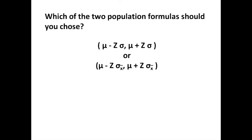Which of the two population formulas should you choose? The first is Mu minus Z times Sigma and Mu plus Z Sigma. And the second is Mu minus Z Sigma of X bar and Mu plus Z times Sigma of X bar. The first is a data formula confidence interval and the second is an X bar formula. You are exactly correct. It is the latter of the two formulas, because we are looking for an interval on X bar and therefore we need to use the formula that recognizes Sigma of the X bar distribution.